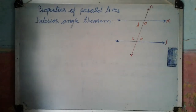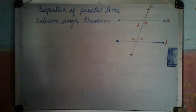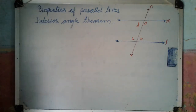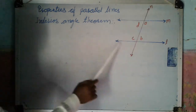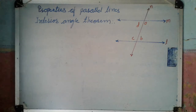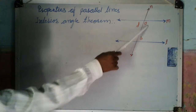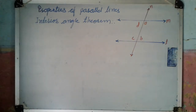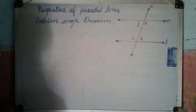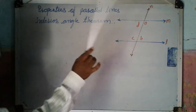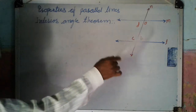Now, we will prove the interior angle theorem. The statement of the theorem is: if two parallel lines are intercepted by a transversal, then the interior angles on either side of the transversal are supplementary. That means, angle A plus angle B is equal to 180 degrees, and angle C plus angle D is equal to 180 degrees. These pairs are supplementary angles.